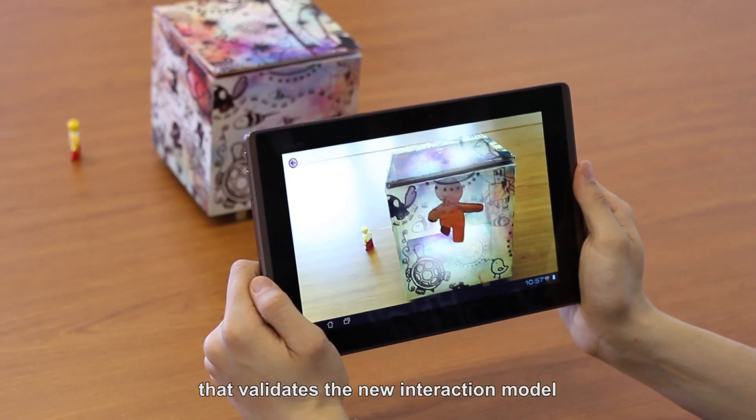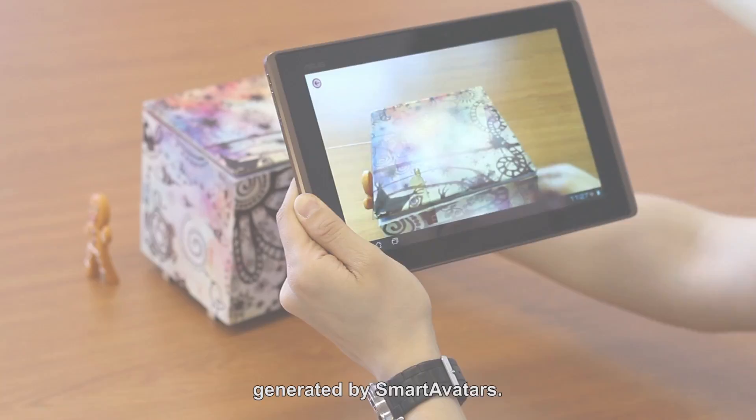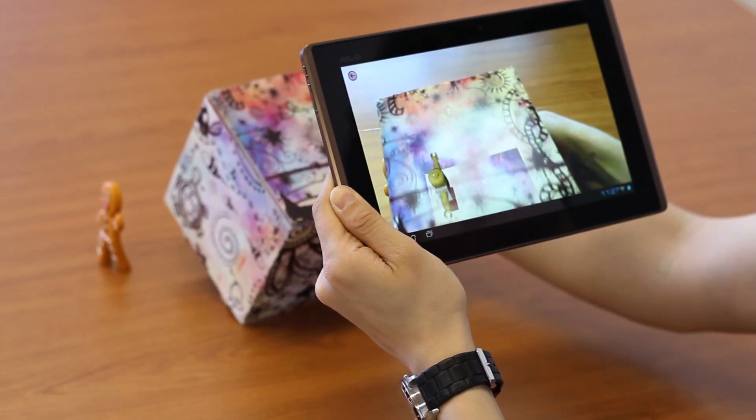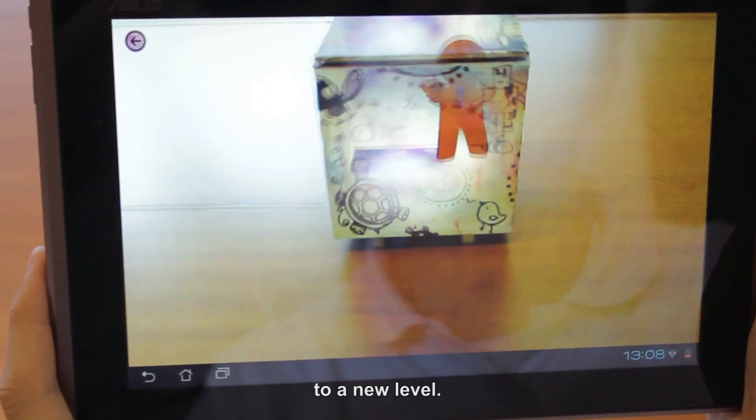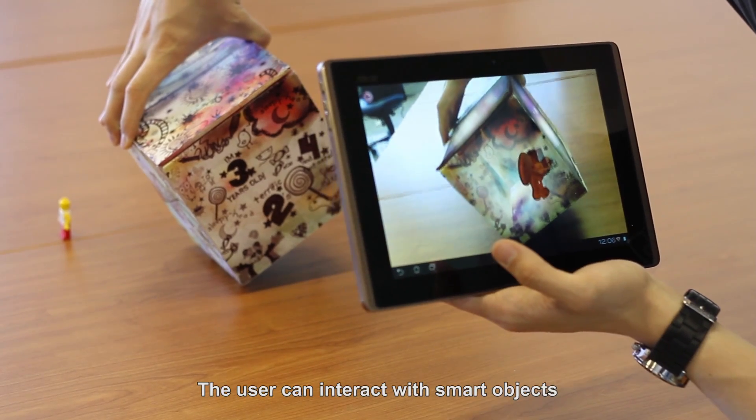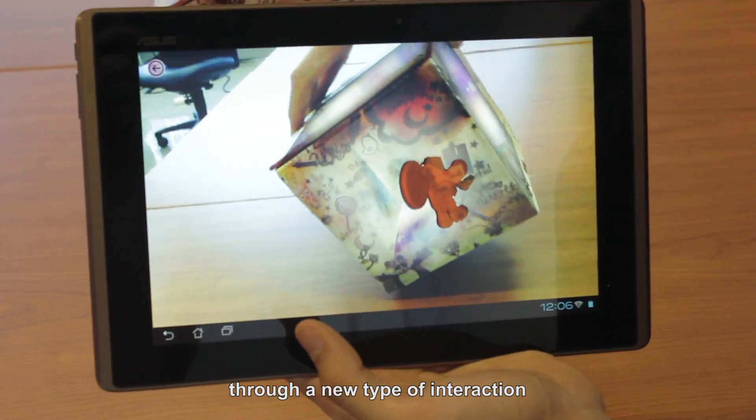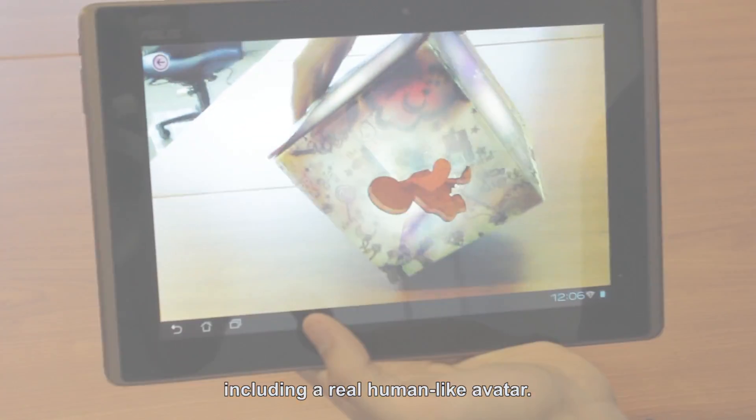Qbox is a new toy that validates the new interaction model generated by smart avatars. We try to push the concept of human-computer interaction to a new level. The user can interact with smart objects through a new type of interaction including a real human-like avatar.